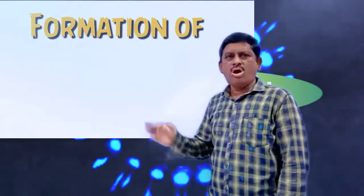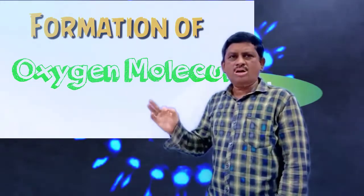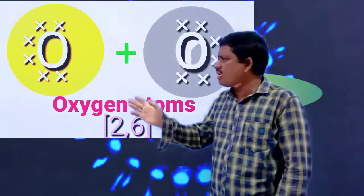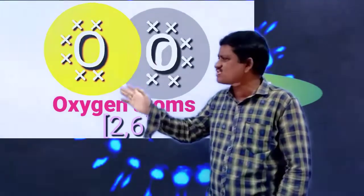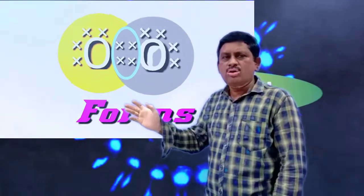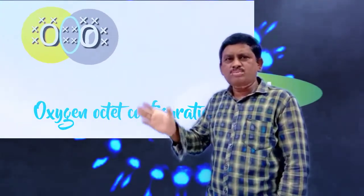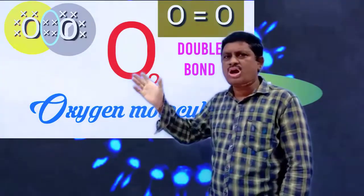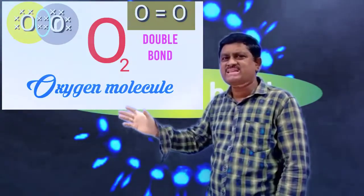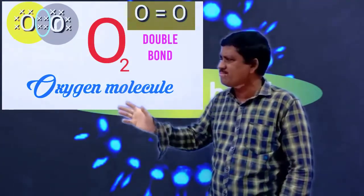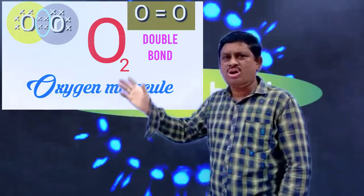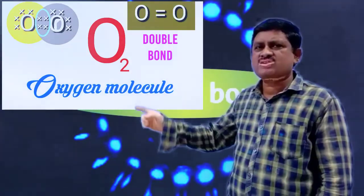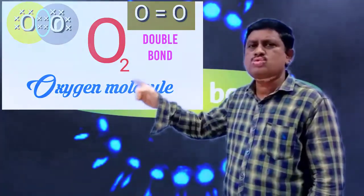Oxygen molecule — how does it form a covalent bond? Oxygen has six valence electrons, so oxygen needs two more electrons to achieve a stable noble gas configuration. One oxygen atom contributes two electrons, and the other oxygen atom contributes two electrons. This contributing pair is equally shared between two oxygen atoms. Finally, two covalent bonds are formed between the two oxygen atoms. The two shared electron pairs constitute a double bond between the two oxygen atoms.